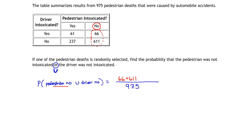The union also includes all the cases where the driver was not intoxicated, which occurs on this second row. So I look at the elements in the second row and have to include those in my union. In that first box we have 237 pedestrians that need to be added to this union. And what about that 611? Well, I've already counted it — that 611 is an intersection amount. I don't need to count it twice to get the total number in my union; in fact, I don't want to count it twice.